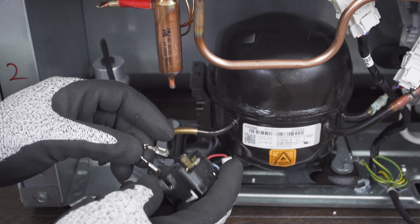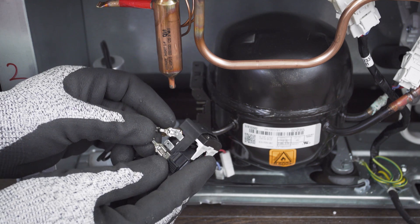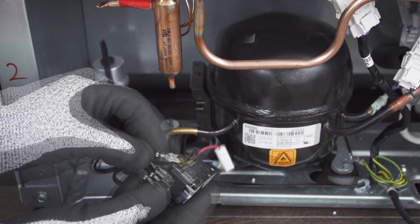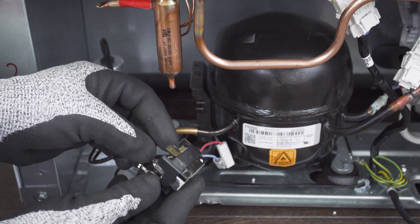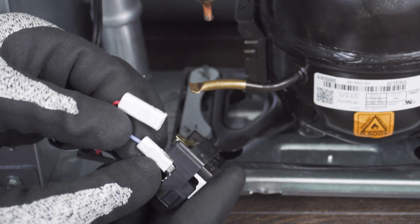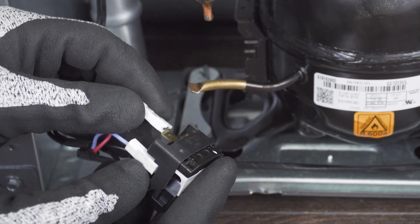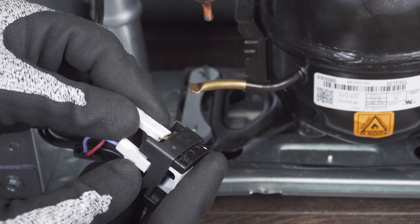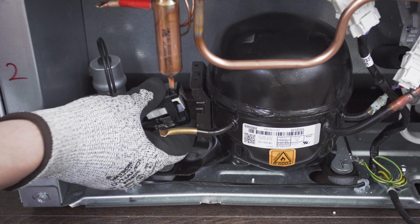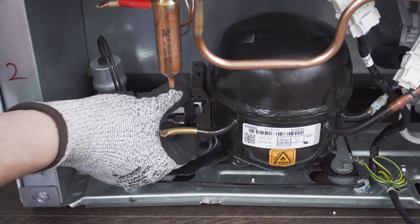If your capacitor is separate from the start relay, then connect it to the two terminals. Now reconnect the wires. If needed, align the relay and overload protector.